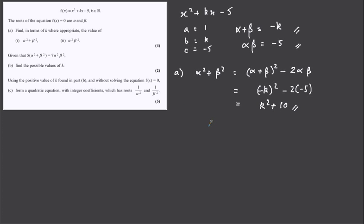And part 2, alpha squared beta squared, slightly easier than part 1, this is alpha beta squared, and that will give me minus 5 squared, 25.